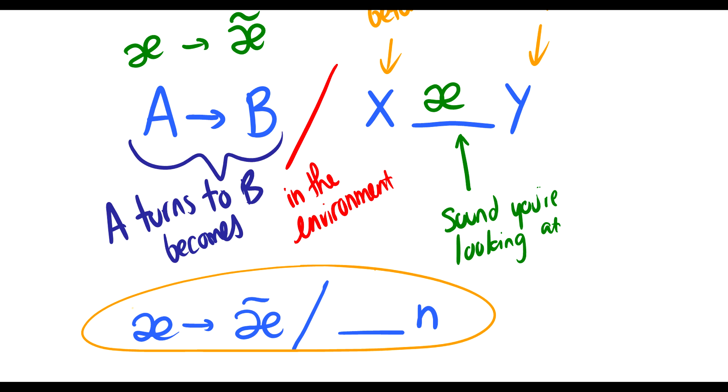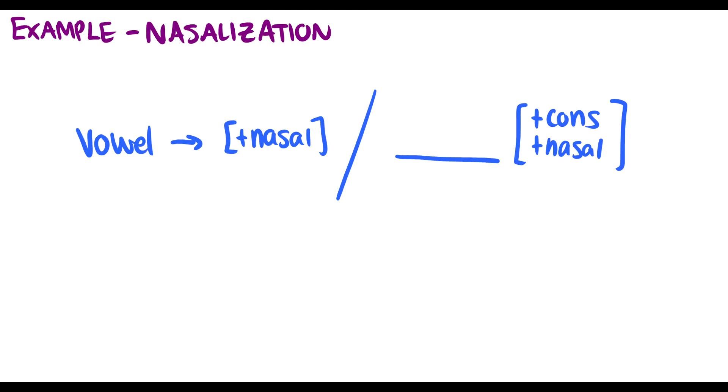So we have A goes to nasalized A in the environment of, well, it doesn't matter what's before it, so we don't put anything. We put the A we're looking at, and this happens before N. So what this means is that A becomes nasalized before N. So that is the description of how formal rules work. And this is a very informal way of writing it. So normally we don't just use sounds here, because there might be more sounds for which this works.